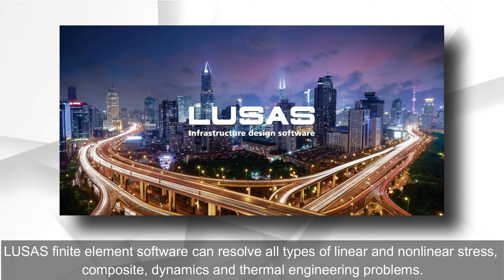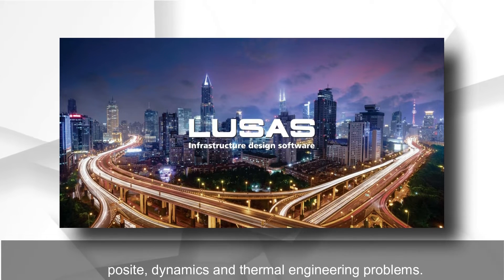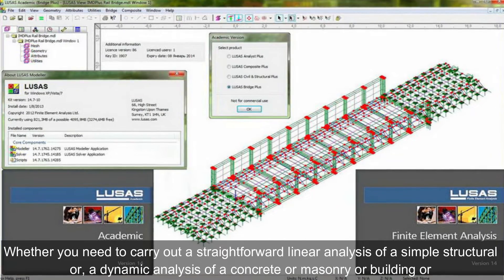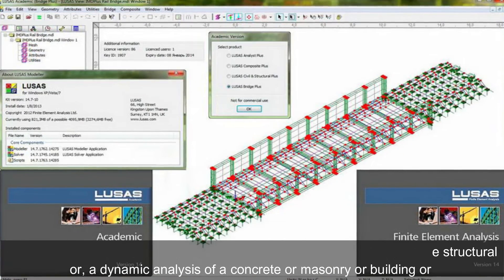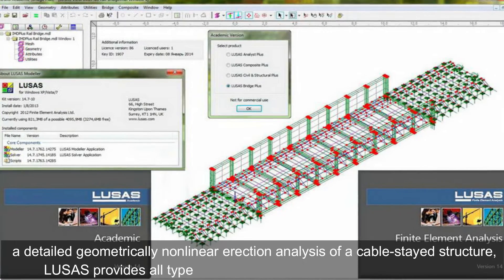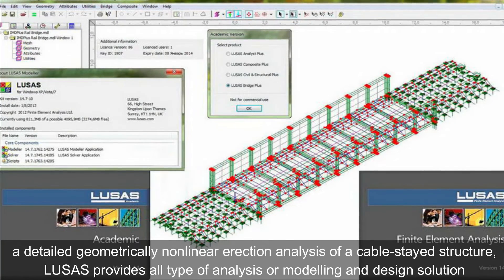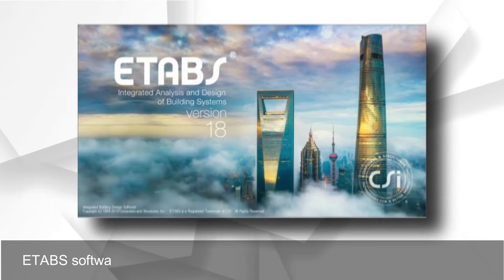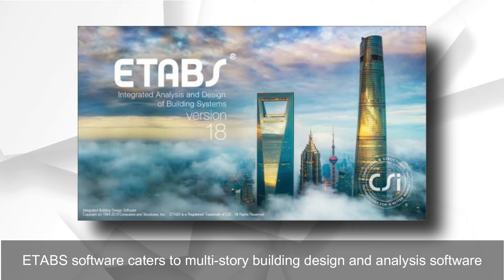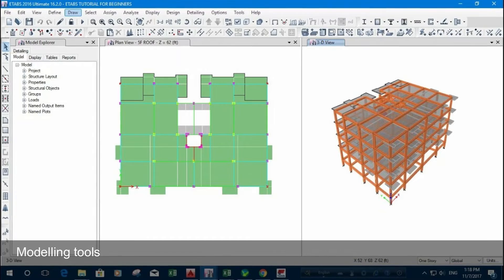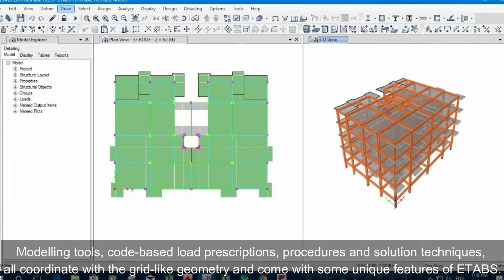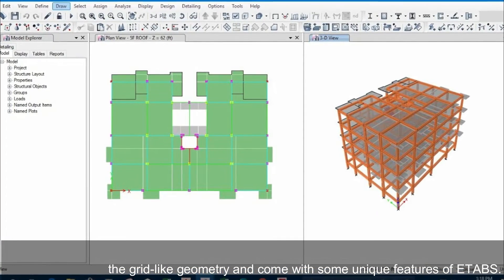LUSAS finite element software can resolve all types of linear and nonlinear stress, composite, dynamics, and thermal engineering problems. Whether you need a straightforward linear analysis of a simple structure or a dynamic analysis of a concrete or masonry building, or a detailed geometrically nonlinear erection analysis of a cable-stayed structure, LUSAS provides all types of analysis, modeling, and design solutions. ETABS software caters to multi-story building design and analysis, with modeling tools, code-based load prescriptions, procedures, and solution techniques coordinated with grid-like geometry.